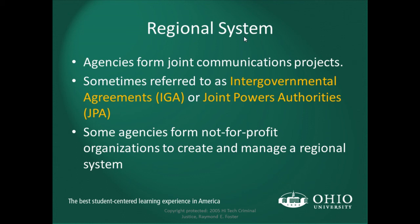Regional systems: agencies can form joint communication projects, sometimes referred to as intergovernmental agreements (IGAs) or joint powers of authority (JPAs). We typically see intergovernmental agreements or MOUs — memorandums of understanding — between agencies governing how information is shared or exchanged. Some agencies form non-profit organizations to create and manage regional systems.